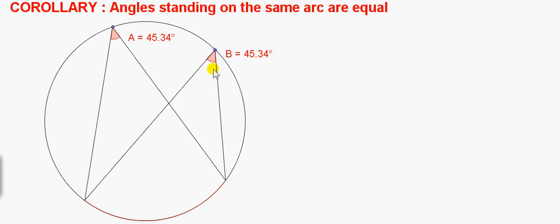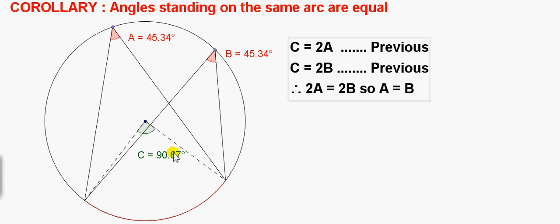So, how do we prove this? Well, we consider the angle at the centre of the circle. So we join the end points of this red arc to the centre of the circle, this point here.